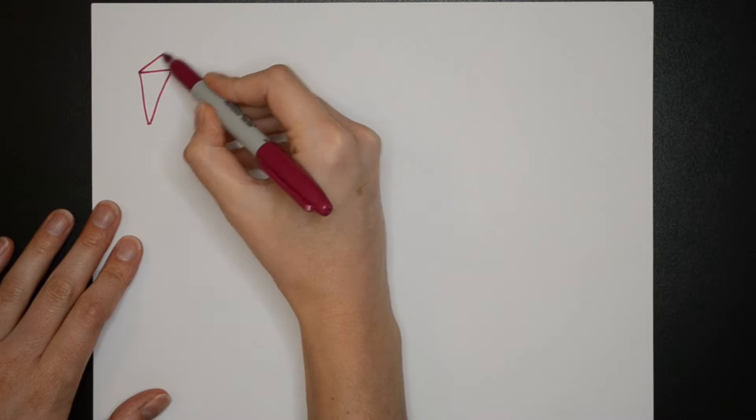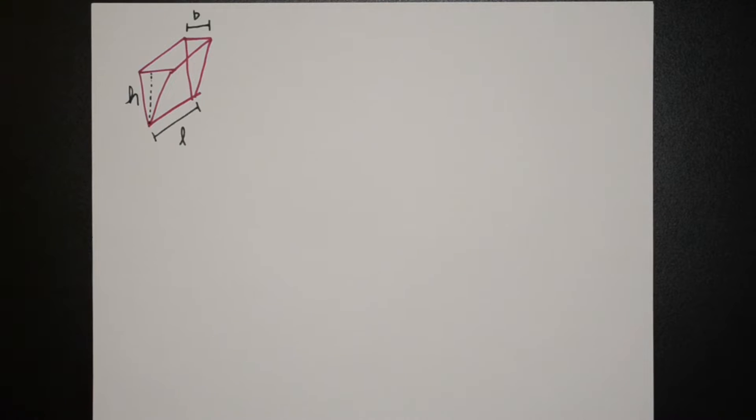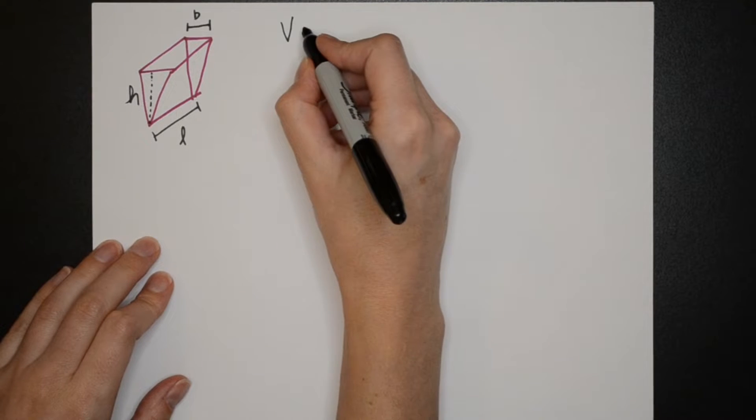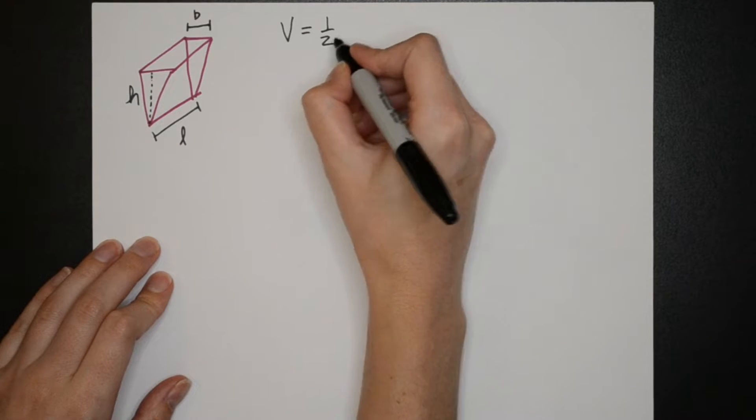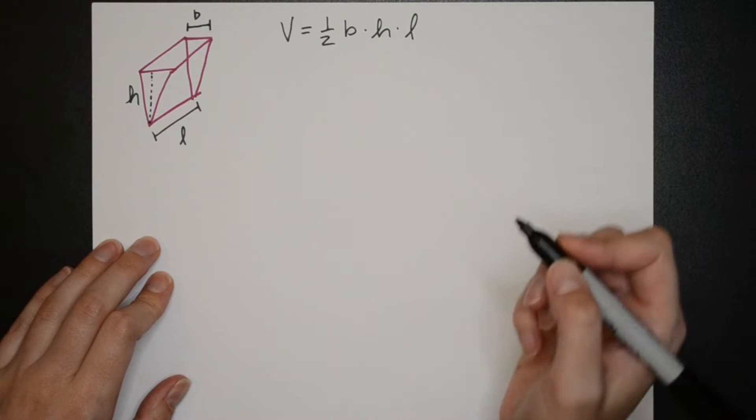To estimate a canoe we will use a triangular prism. The volume of this shape is one half base times height, so that's the triangle, and then multiplying by the length will give us the volume of the prism.